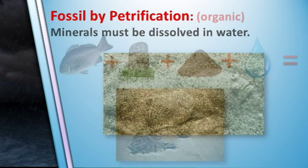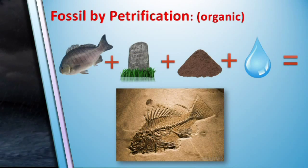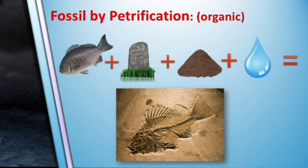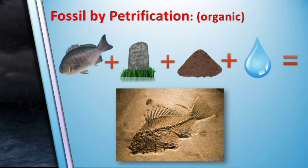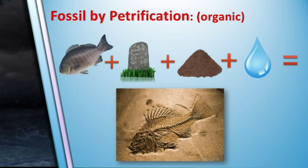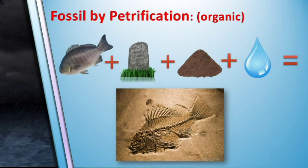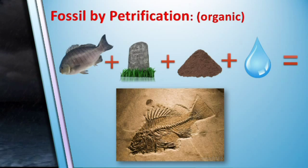That means we must have four ingredients for fossilization by petrification in regards to organic matter: an organism to be fossilized, a rapid burial for preservation, sediments that contain the correct minerals, and water to carry those minerals into the porous structures of the organism. Without those ingredients, a typical permineralized organic fossil, as we find all over the world, would not be created.